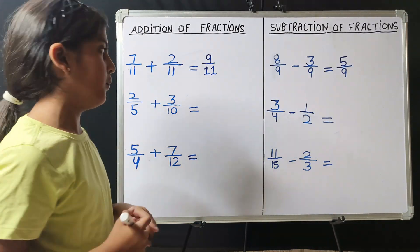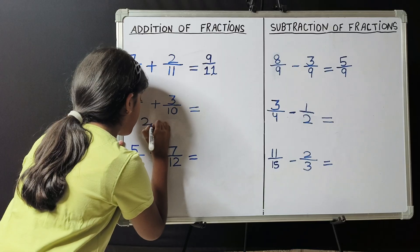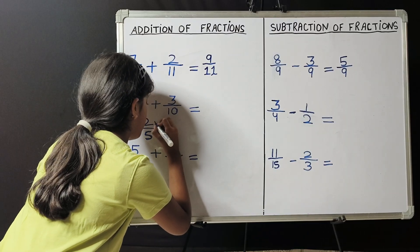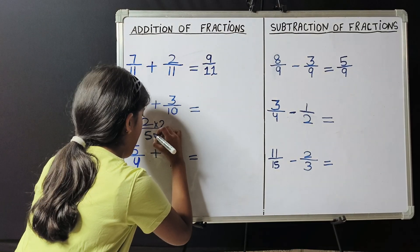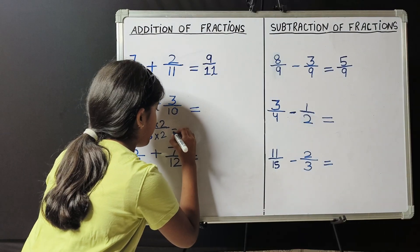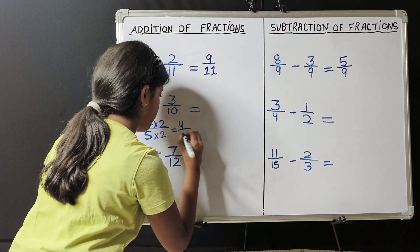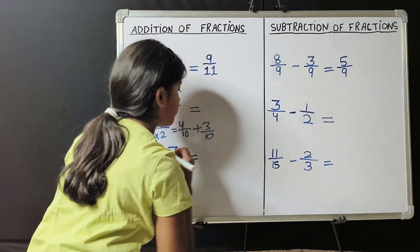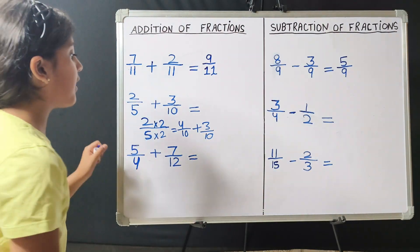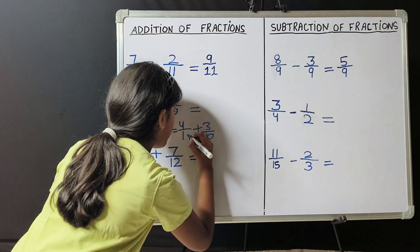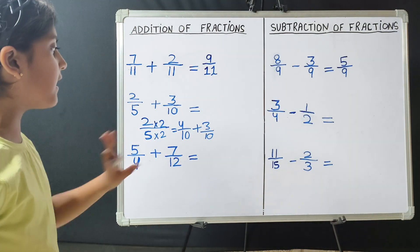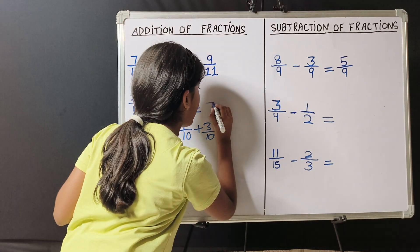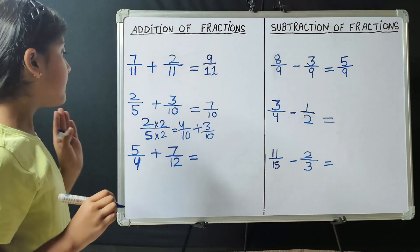By multiplying it by 2. So when we are multiplying 5 with 2, we will also multiply 2 with 2. So 2 times 2 is 4 and 5 times 2 is 10, plus 3 upon 10. Our new fraction is 4 upon 10. So now we will add 4 upon 10 and 3 upon 10. 4 plus 3 is 7 and we will write this 10 as it is. So 7 upon 10 is the answer.